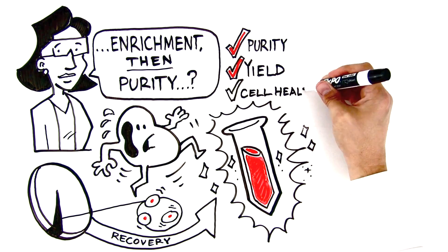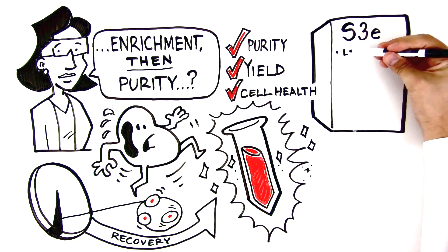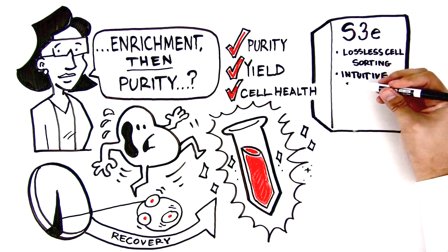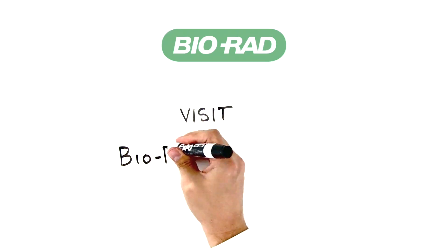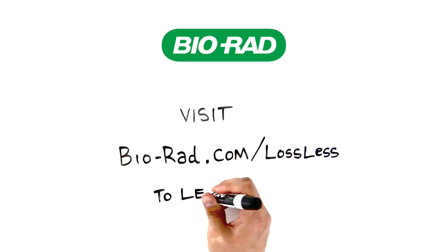With the S3e's lossless cell sorting feature, intuitive software, and compact design, isolating rare cell populations in your own lab has never been easier. Visit BioRad.com/lossless to learn more.